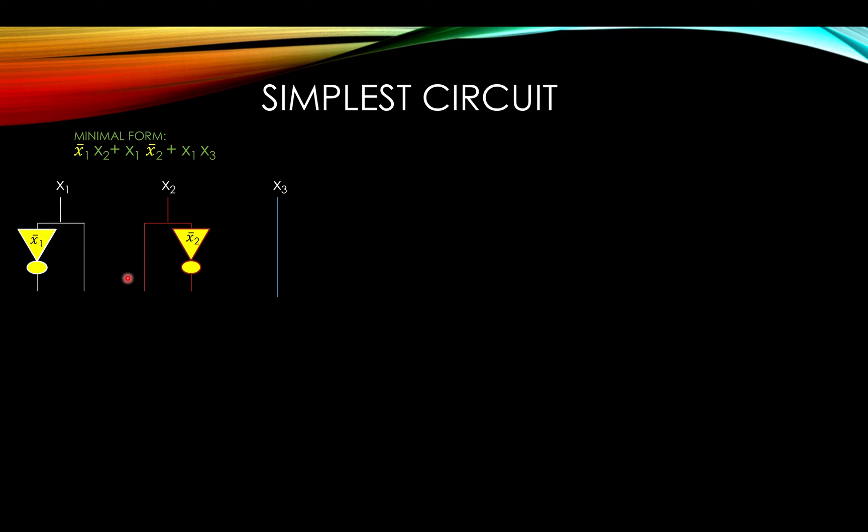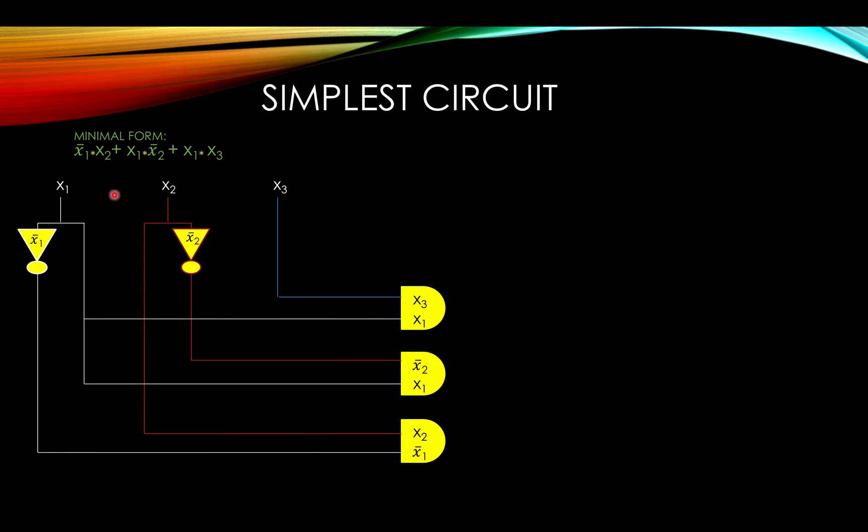And we know we have three AND gates because we have three terms in the minimal form. Then once we have that, we connect the lines accordingly to the AND gates. Then we write the OR gate which connects from the AND gates to it, which gives us our simplest circuit.